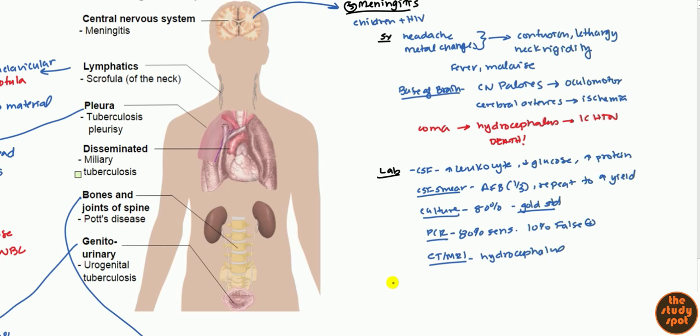How would you treat it? Of course, you treat with your chemotherapy of the ERPI. ERPI stands for isoniazid, rifampin, pyrazinamide, and ethambutol. However, glucocorticoids have also shown to help. So that might be a good choice as well.